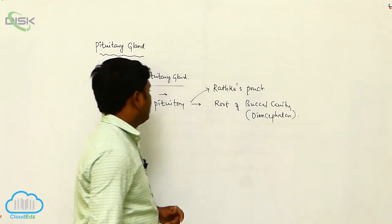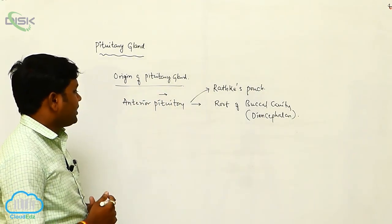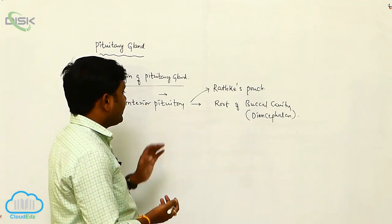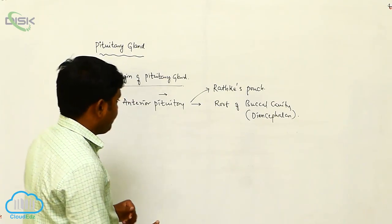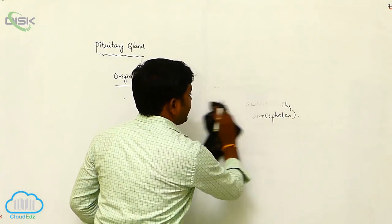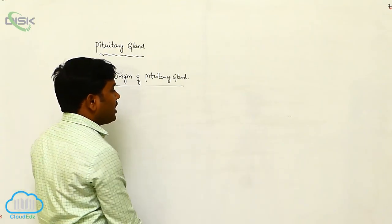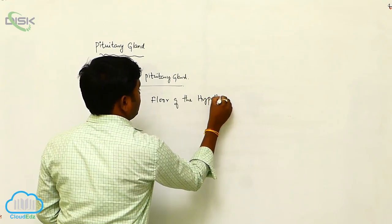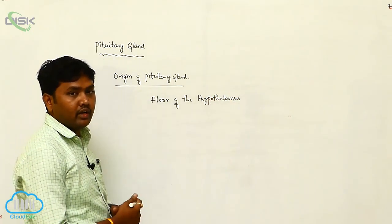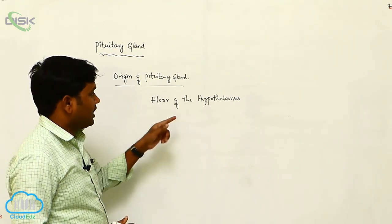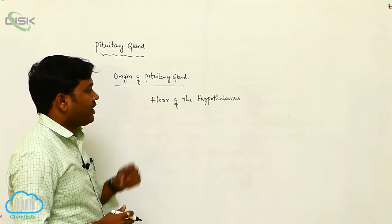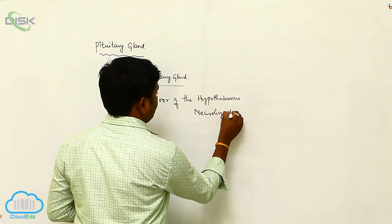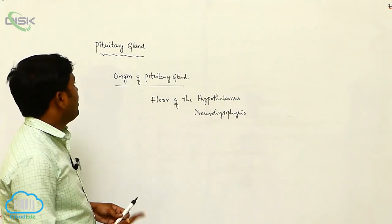The secretions of the anterior pituitary make up the major part of pituitary output. The posterior pituitary, or neurohypophysis, develops from an extra-embryonic growth from the floor of the hypothalamus, inducing infundibular development.